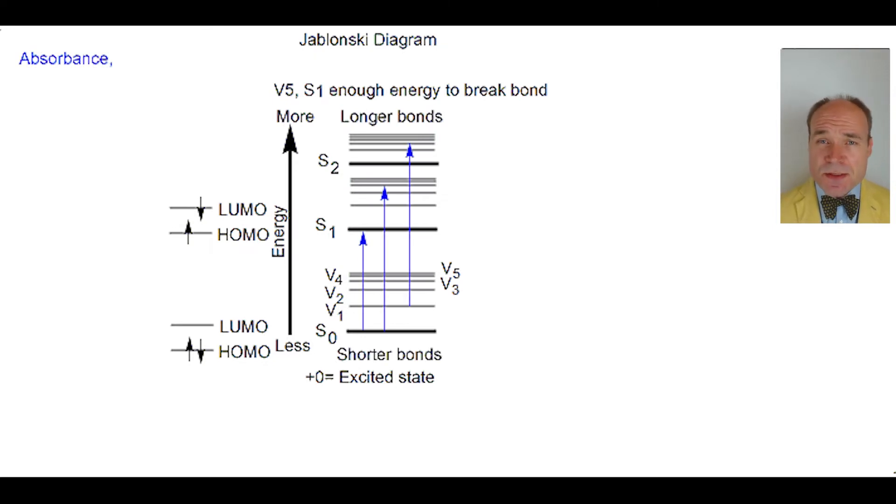The absorbance of a radiative photon's energy by the molecule causes one of the electrons in the HOMO to gain energy and enter the original LUMO, or even a higher energy unoccupied orbital. The electron can also rise to higher vibrational or rotational energy levels. From this highest energetic state,